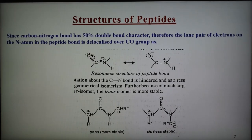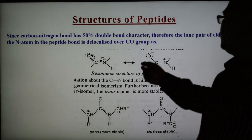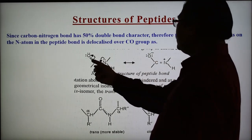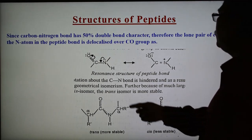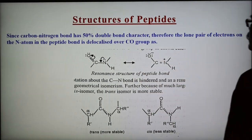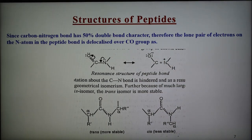Since the carbon-nitrogen bond has 50% double bond character, the lone pair of electrons on the nitrogen in the peptide bond is delocalized over the C=O group. Two resonance structures of the peptide bond are shown: one is the covalent structure and the other is the ionic structure. The delocalization of the electron pair gives rise to two resonance structures of the peptide bond.